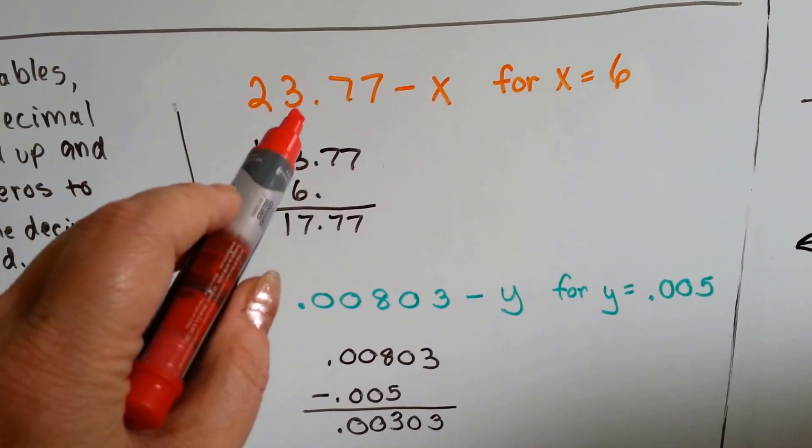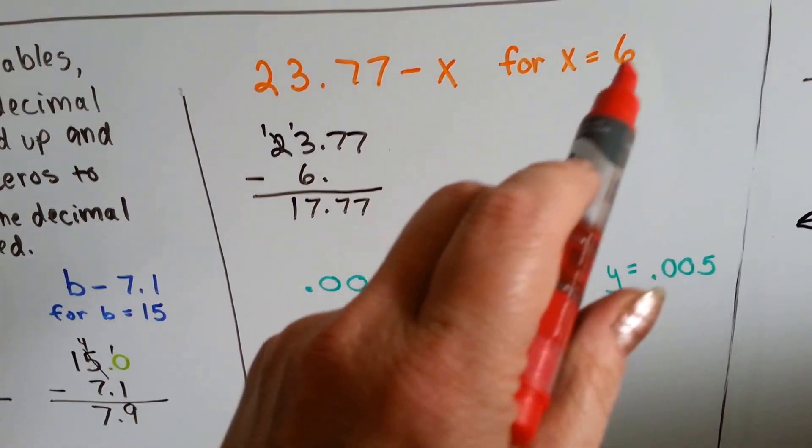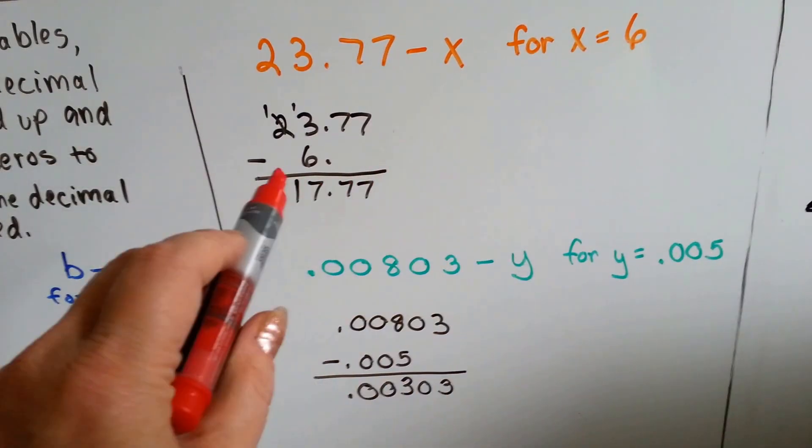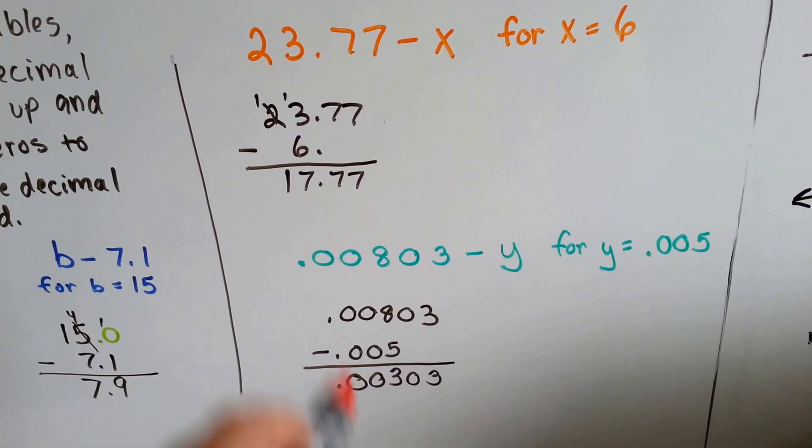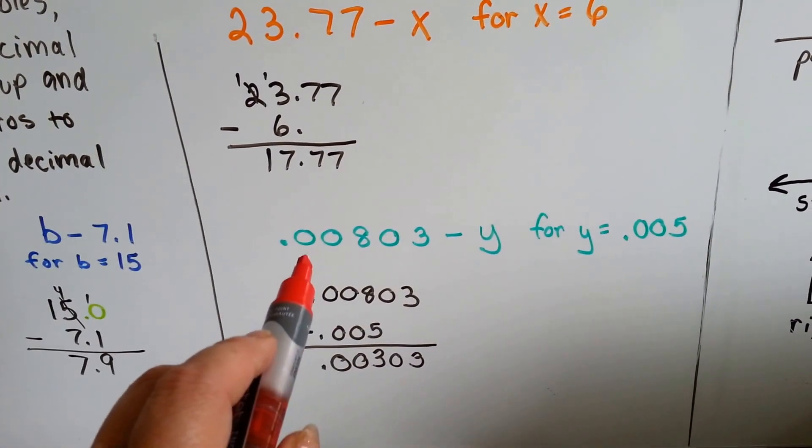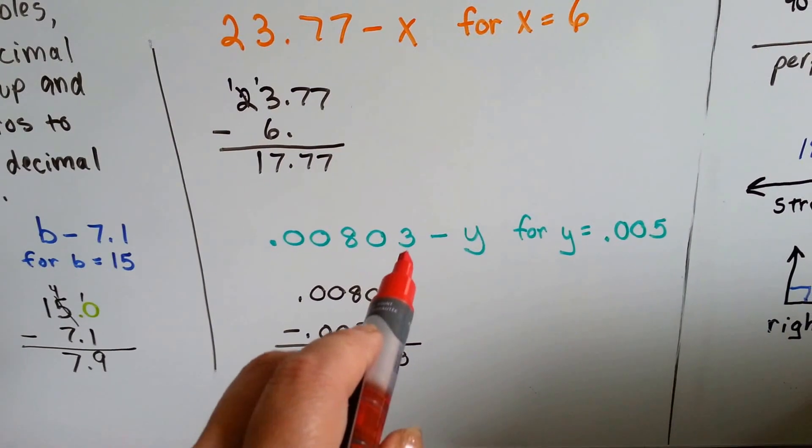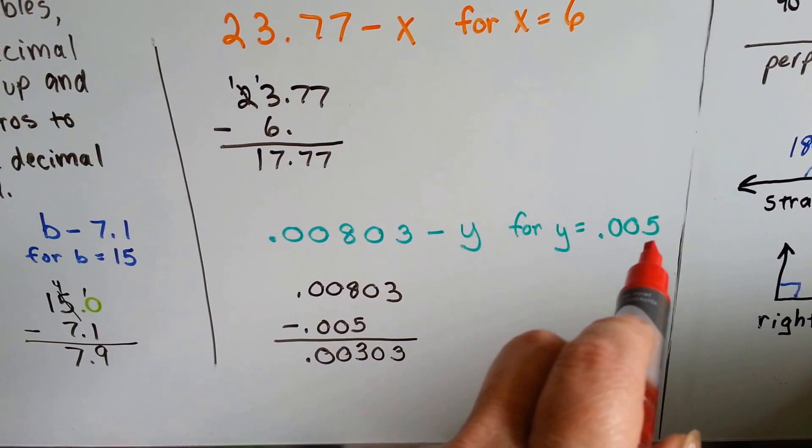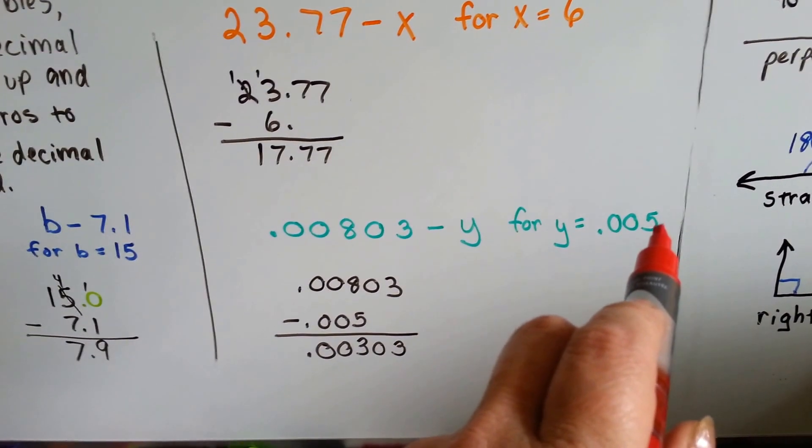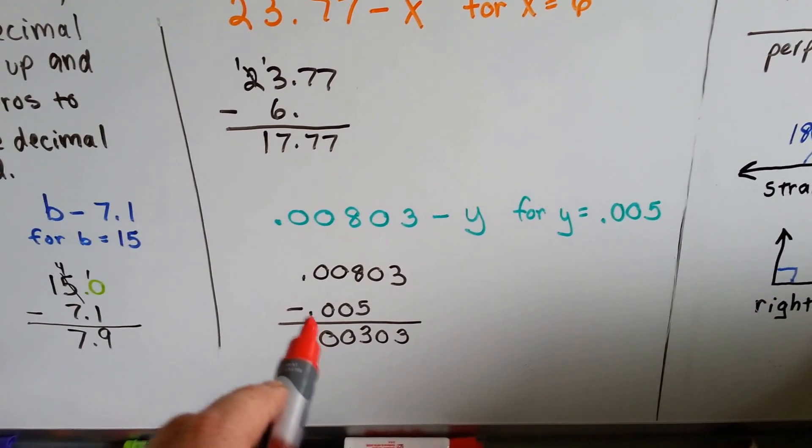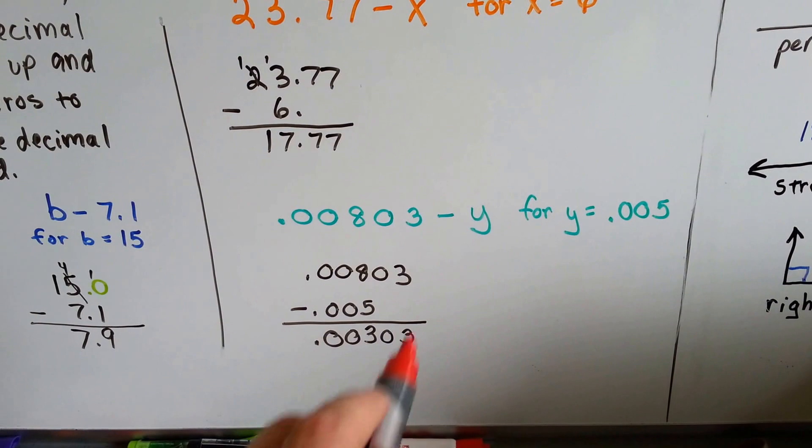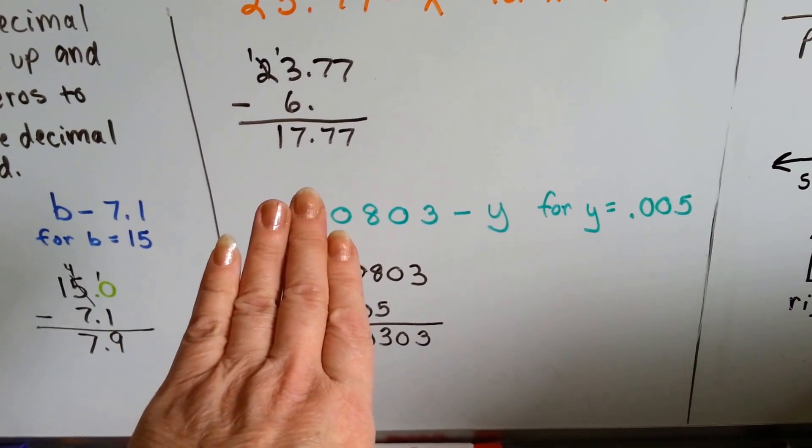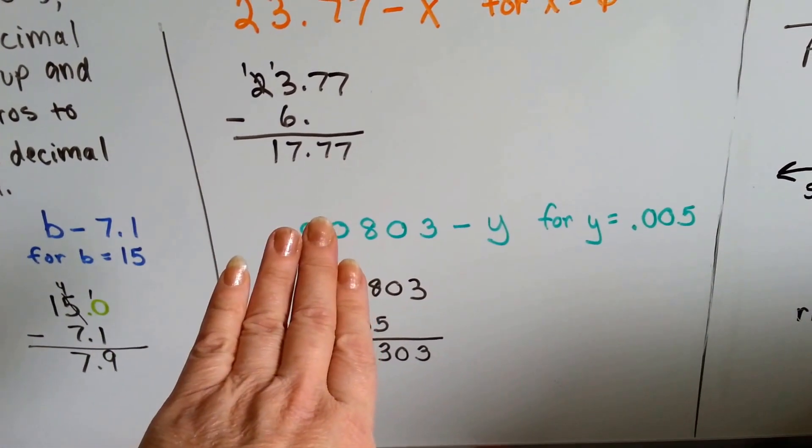If you're dealing with a number like 23.77 minus x and x is equal to 6, you don't really need the zeros. Just plug the 6 into the equation and do your subtraction. If you've got 803 thousandths minus y, and y is equal to 5 thousandths, just make sure your decimal points are lined up, and you can just drop them down as you would in any other number. Just make sure your decimal points are lined up.